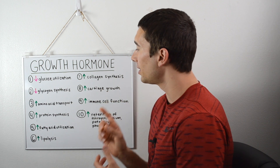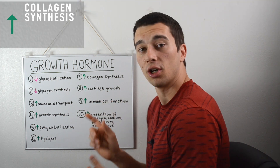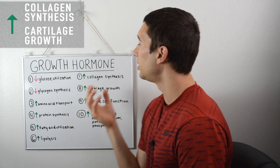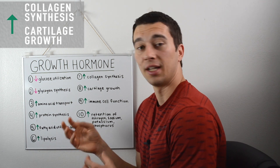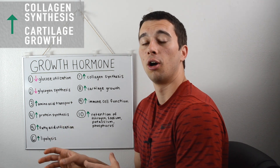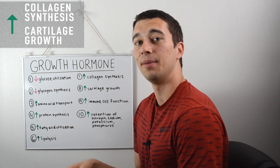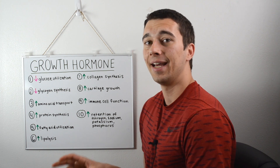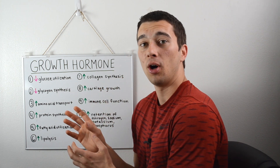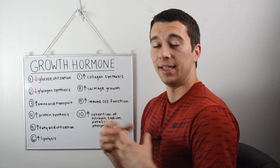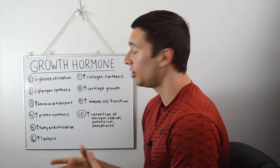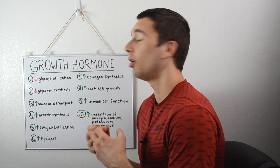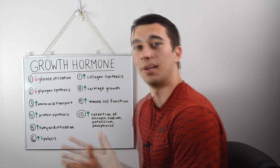Moving on to collagen synthesis and cartilage growth — these are both promoted by an increase in growth hormone. Collagen and cartilage are important for things like tendons, ligaments, and joint structures. Growth hormone is going to be a molecule that in the bloodstream promotes a tissue growth, collagen growth, and cartilage growth environment.